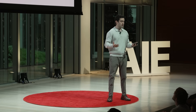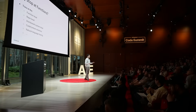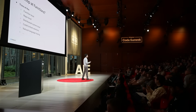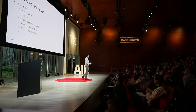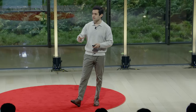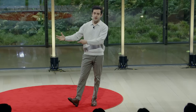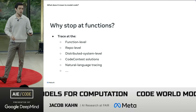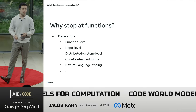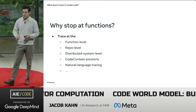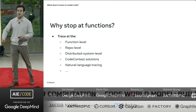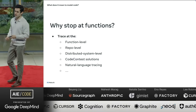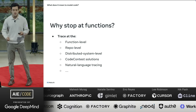We don't have to stop at functions. We could think about entire repository-level execution traces, distributed system-level execution traces, modeling execution for code contest solutions, or more complex programs with high complexity. We could also transition that into natural language tracing, as I'll show in a moment.